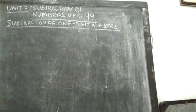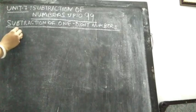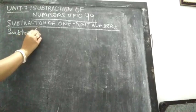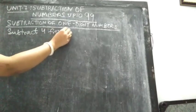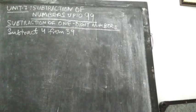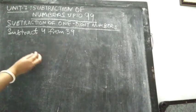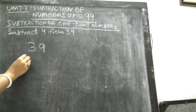So let us take an example. We will subtract 4 from 39. So subtract 4 from 39. Always remember in subtraction, the first number should be the greatest number or bigger number. So which number is bigger? 39 — 39 is bigger. So write like this: 39 minus 4.